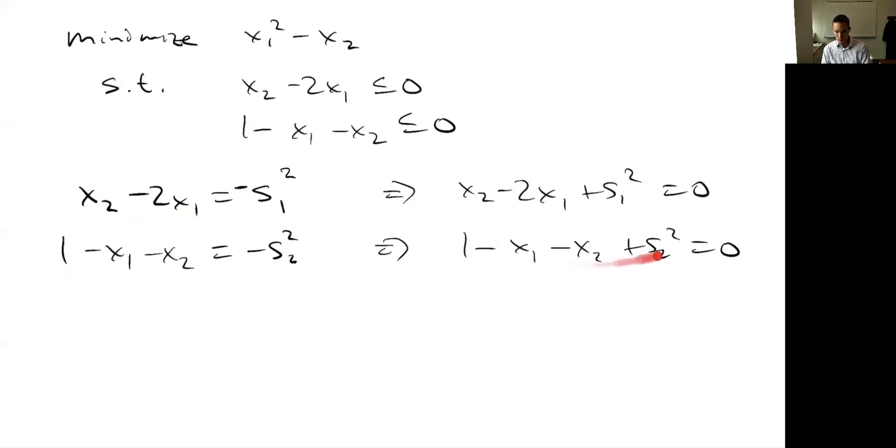So now I've got an objective and equality constraints. I can do what we did last time. You can form a Lagrangian. It's going to be f, x1 squared minus x2 plus lambda 1. And notice I'm going to have two lambdas now because I've got two constraints, x2 minus 2x1 plus s1 squared plus lambda 2. Now the second constraint, 1 minus x1 minus x2 plus s2 squared. So now I've changed this into an unconstrained problem. And how many variables do I have? I've got six: x1, x2, lambda 1, lambda 2, s1, s2.